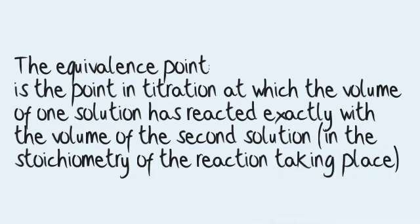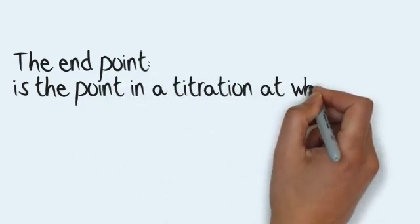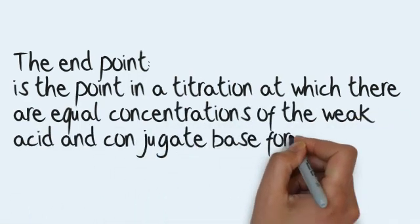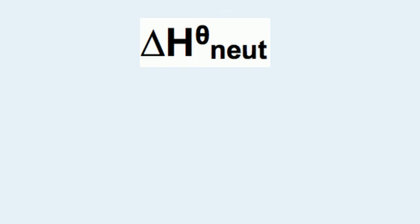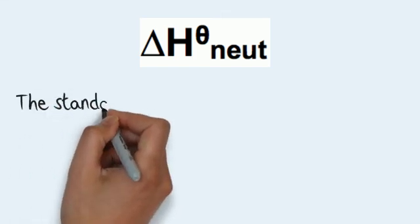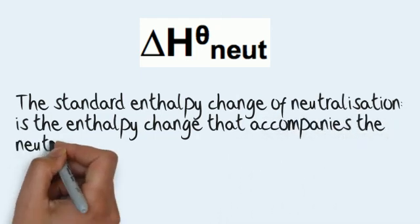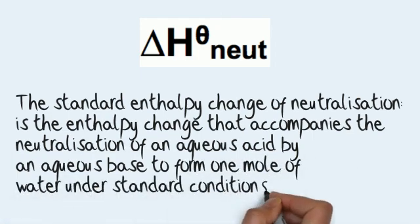The equivalence point is the point in a titration at which the volume of one solution has reacted exactly with the volume of the second solution in the stoichiometry of the reaction taking place. The end point is the point in a titration at which there are equal concentrations of the weak acid and conjugate base forms of the indicator. The standard enthalpy change of neutralisation is the enthalpy change that accompanies the neutralisation of an aqueous acid by an aqueous base to form one mole of water under standard conditions. This is a common exam question.